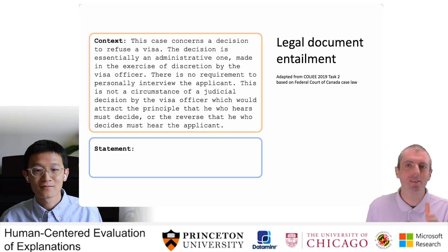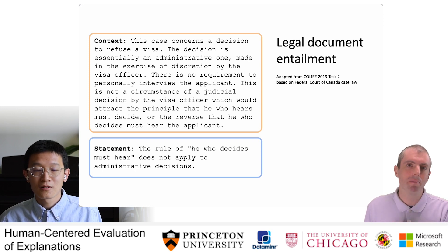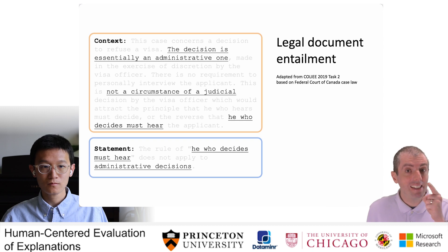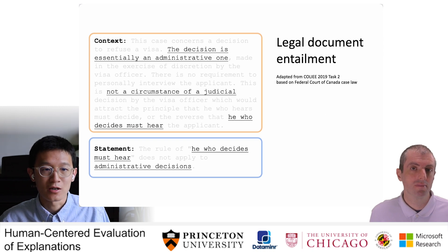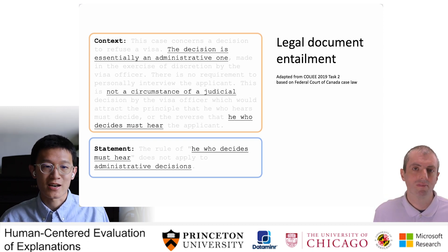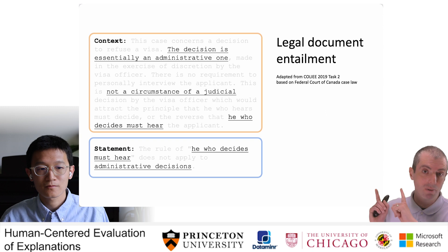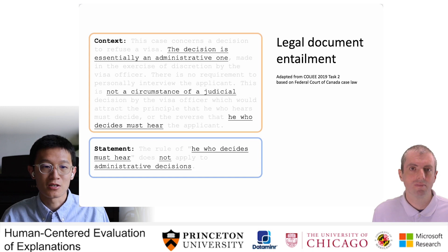Luckily, we have a computer to explain what's going on in this case. The thing we need to predict is whether the statement — the rule of 'he who decides must hear' — does not apply to administrative decisions. Could this claim be supported by something in the context? So the first question is, is this an administrative question or not? Both the statement and the context are talking about an administrative decision, not a judicial one. Well then, if it is administrative, does the rule of 'he who decides must hear' apply? At the end of the context we can see a mention of this exact same rule, and the context says this applies to a judicial decision — and the magic word here is 'not', a negation. So for this example, the answer is yes: the context does entail the statement.